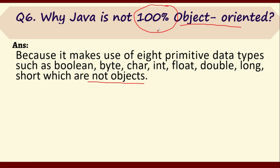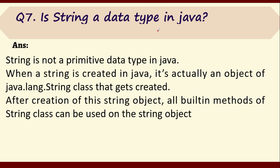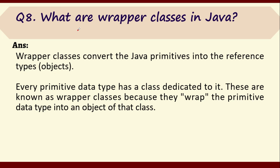Question number seven: is String a data type in Java? String is a data type, but it is not a primitive data type — it is a reference data type. When you create a String, an object of java.lang.String is created, and you can use all the built-in methods of this String class. So when you declare a variable of type String, a reference type is created, not a primitive type.